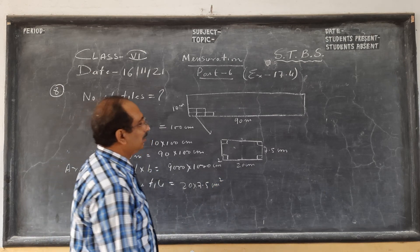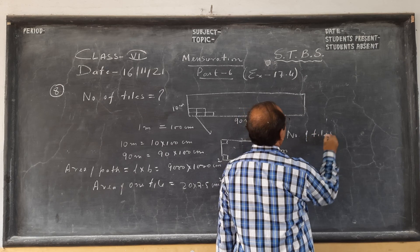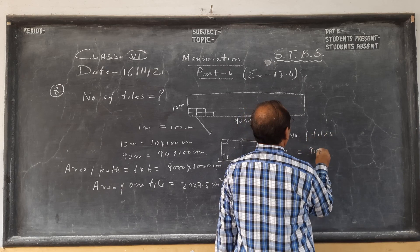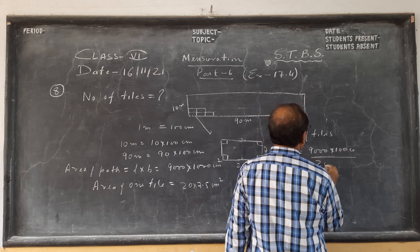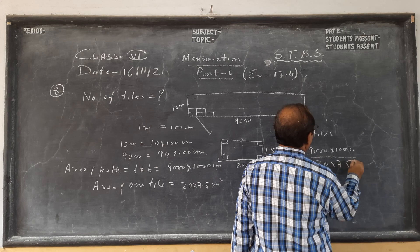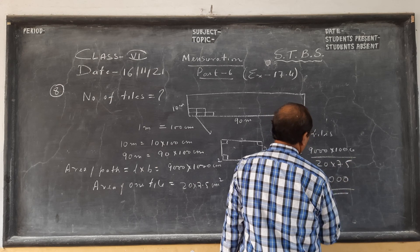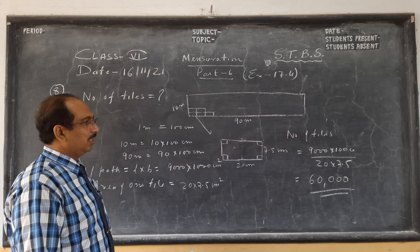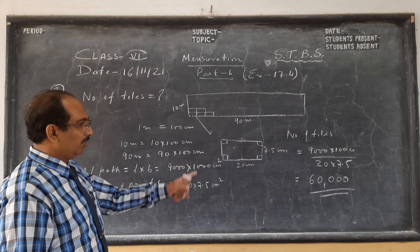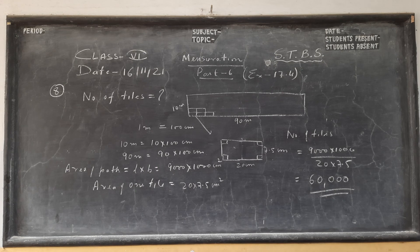So number of tiles is total area divided by area of 1 tile. If you solve this, children, you should get 60,000 tiles. So kindly pause the video and copy, then I will show you the cancellation part.